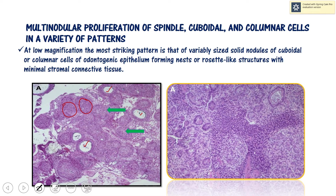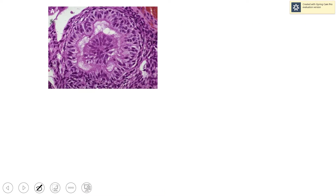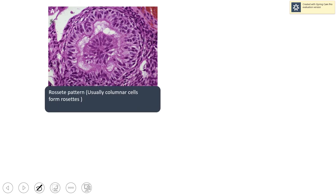In between these cell-rich nodules there is also presence of spindle or polygonal odontogenic epithelial cells — these are the stellate reticulum-like spindle-shaped cells. Another pattern that can be seen is a rosette-like structure. Columnar cells typically form this rosette pattern.